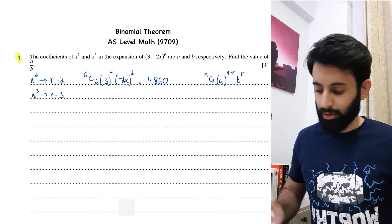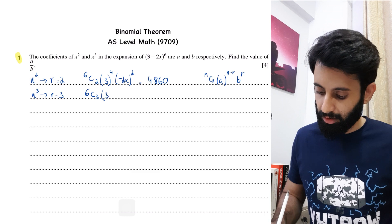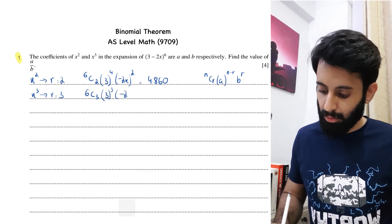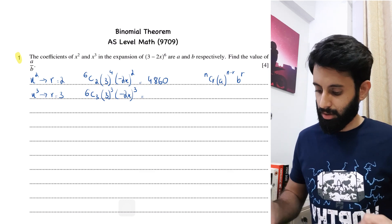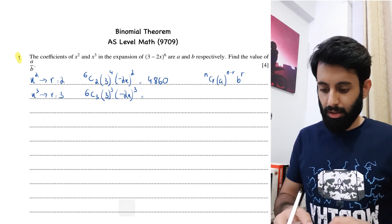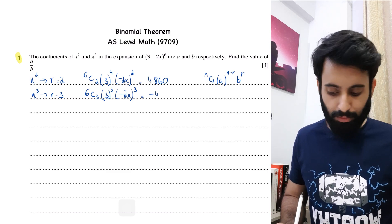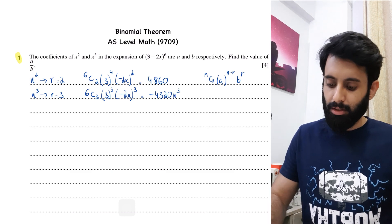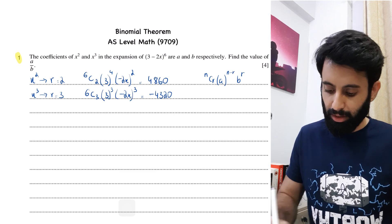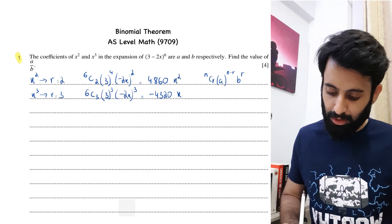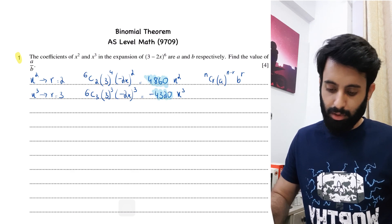Now plugging in r = 3, we have 6C3 · 3³ · (−2x)³. That gives us 6C3 times 3³ times −8, which is −4320 with an x³. I'll write x³ to make the point that this is the coefficient of x³, but then we get rid of it.